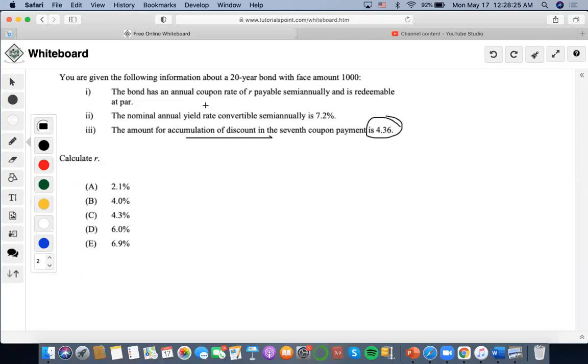So what we're going to do now is we are going to determine what is occurring at the seventh coupon. When does the seventh coupon occur? Well, the seventh coupon would... let's see, everything is semi-annual, right? So 20 times 2, 40 payments in all, right?